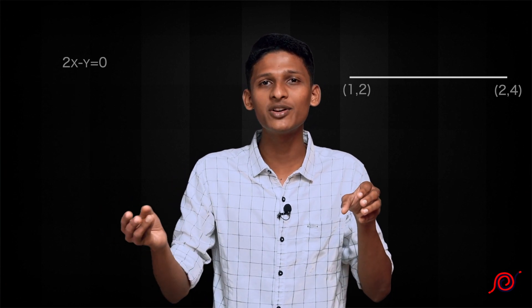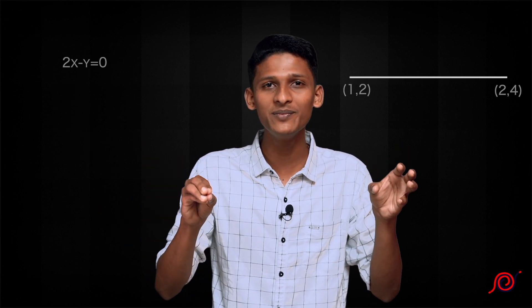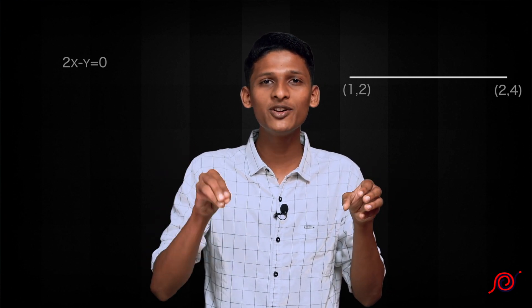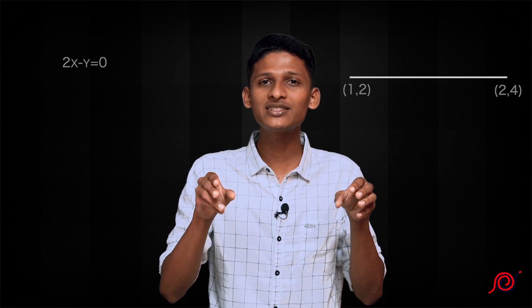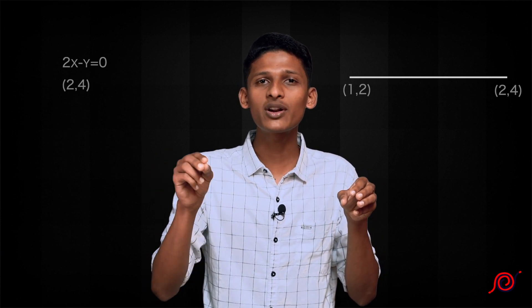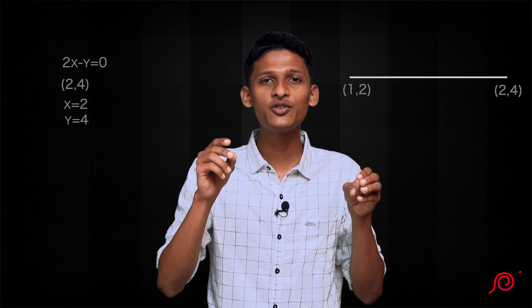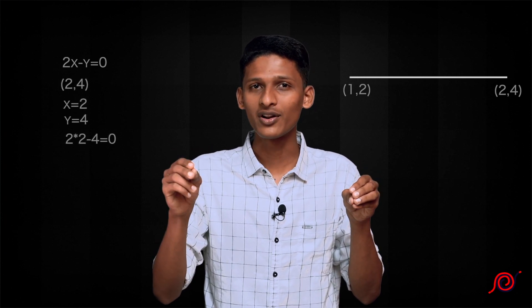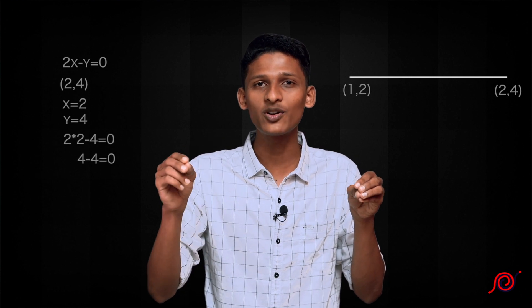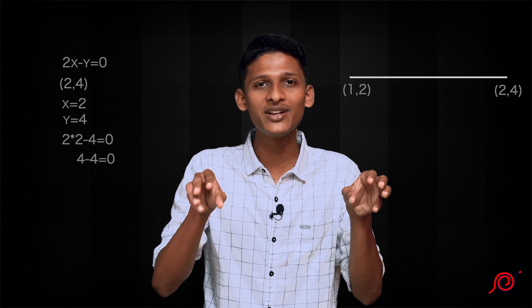To satisfy this line, we substitute that point into the equation. For the point 2, 4: 2x - y = 0 becomes 2(2) - 4 = 4 - 4 = 0. Those two points satisfy this line. Any point on this line will satisfy the equation. If a point is not on this line, it cannot satisfy. For example, 3, 3 is not a point on this line.